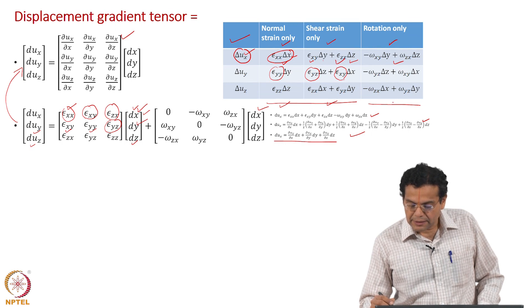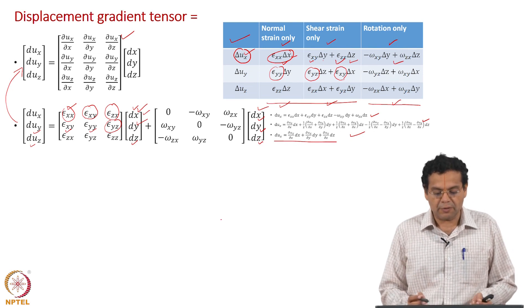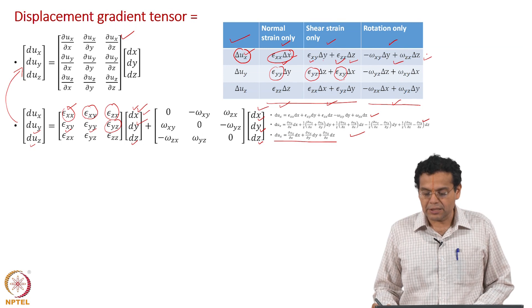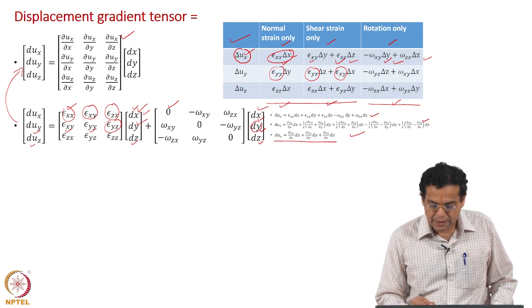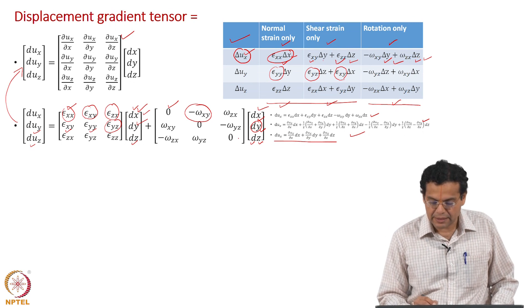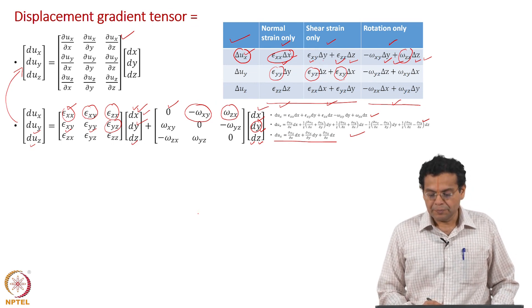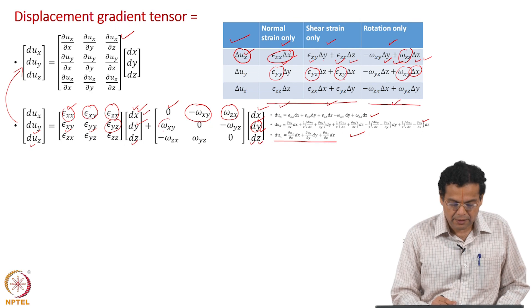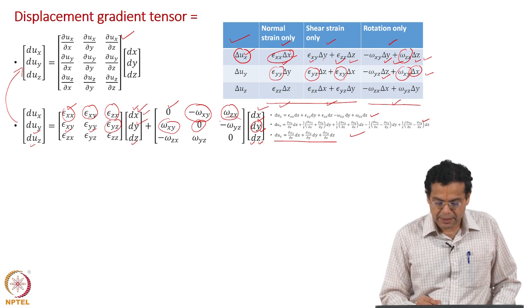Now let us look at the contribution from rotation. Here we have dx, dy, dz and we represent this again in matrix form. For the first row — difference in x displacement — there is no dx component, so that diagonal entry is 0. Taking dy, the corresponding term is minus omega_xy. Taking dz, the corresponding term is omega_zx. For the y displacement, the dx contribution is omega_xy, there is no dy term so that is 0, and the dz contribution is minus omega_yz.